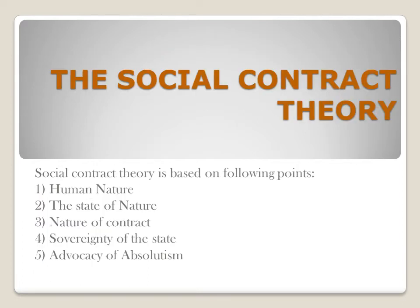Now we will understand the social contract theory given by Thomas Hobbes — what was the basis of social contract theory and why people made this contract. The social contract theory was based on five key points: human nature, the state of nature, the nature of the contract, the sovereignty of the state, and Hobbes's advocacy for absolutism. Hobbes is known as the first founder of unlimited sovereignty, because he believed in a powerful, absolute state.